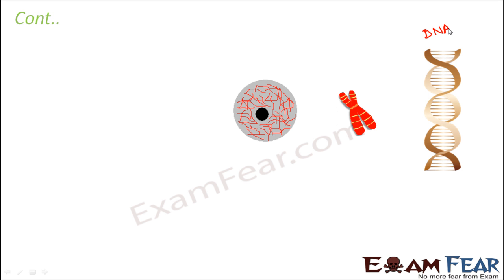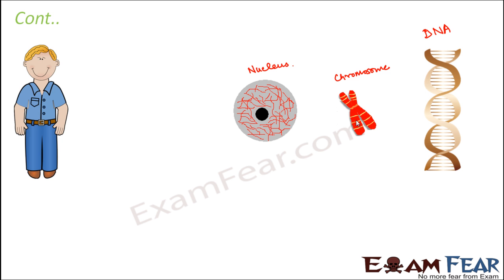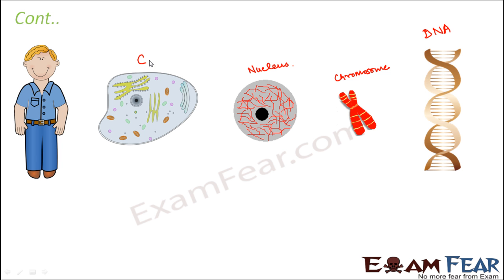Now the question is, where is this DNA located? DNA contains all the information and it is located in the gene, and the gene is located in the chromosome. Here you can see the entire structure is the chromosome, and the yellow colored strands are the genes. When you magnify them, you can see DNA arranged in this fashion. The chromosome is located inside the nucleus — you can see the red colored thread-like structures inside the nucleus. The nucleus is located inside the cell, and the body is made up of a large number of cells. Inside every cell you have a nucleus, inside the nucleus you have chromosomes, genes, and the DNA.